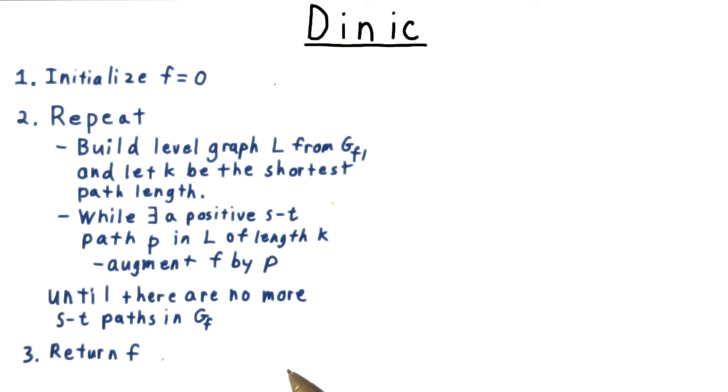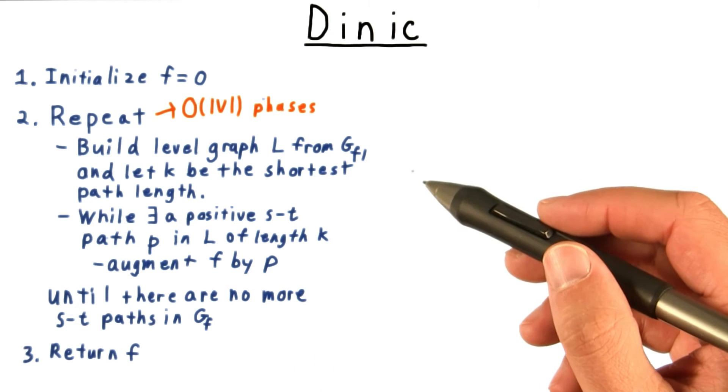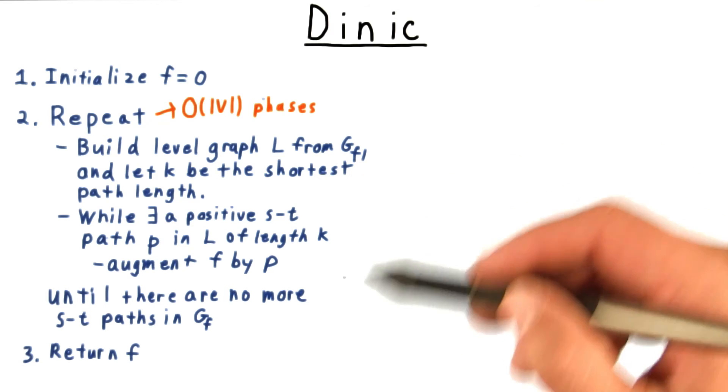And finally, we just return the flow. Turning to the analysis, we'll call one iteration of this outer loop a phase.